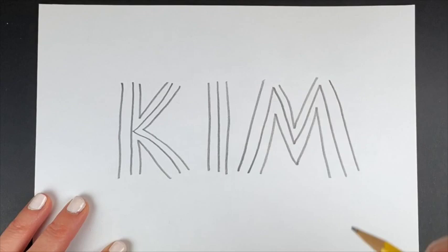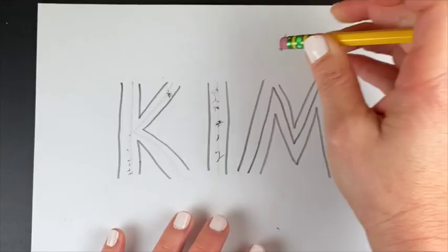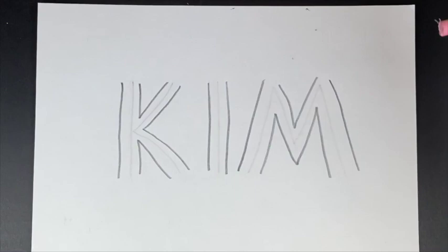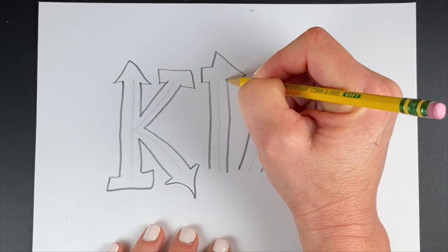Next, erase the simple lines that you started with to get them out of the way. Now we need to add some interesting shapes to the tips of each of our letters — use rectangles, arrows, swirls. It's okay if some of your shapes overlap too.